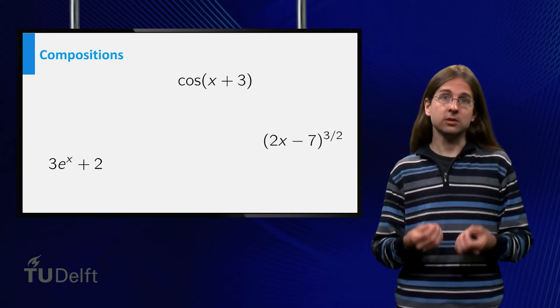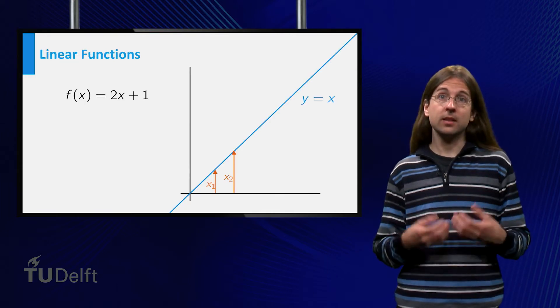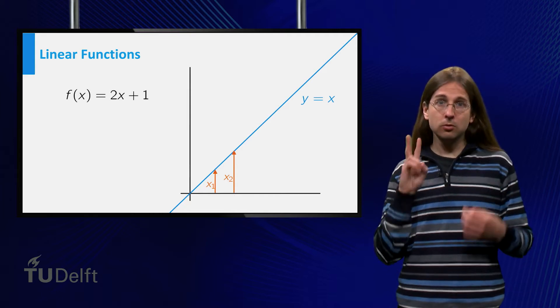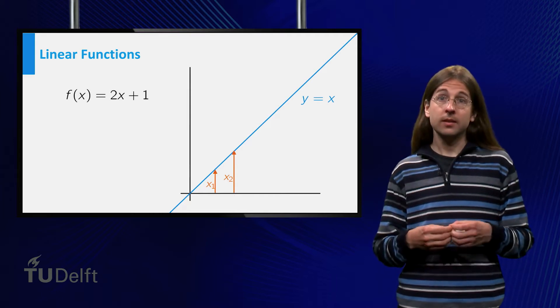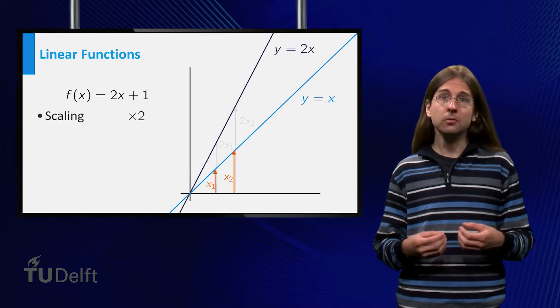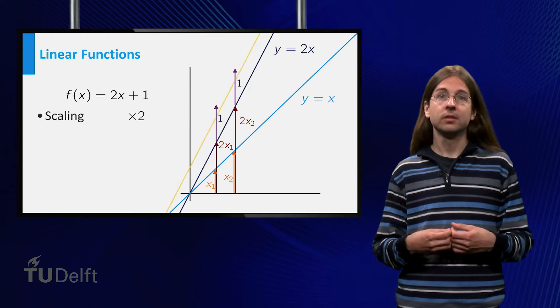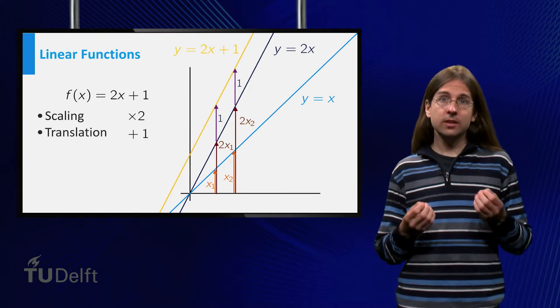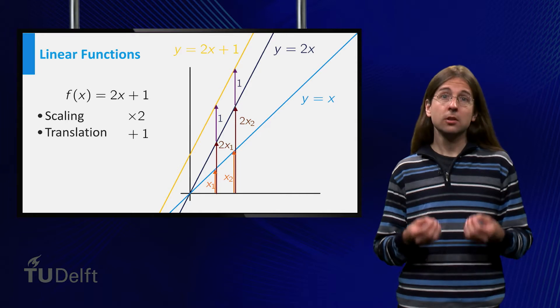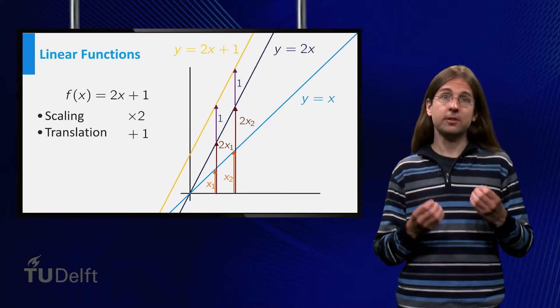Linear functions such as f equals 2x plus 1 can be viewed as having two characteristics. There is the scaling and the translation. We will consider these two separately. First we will consider only the translation.